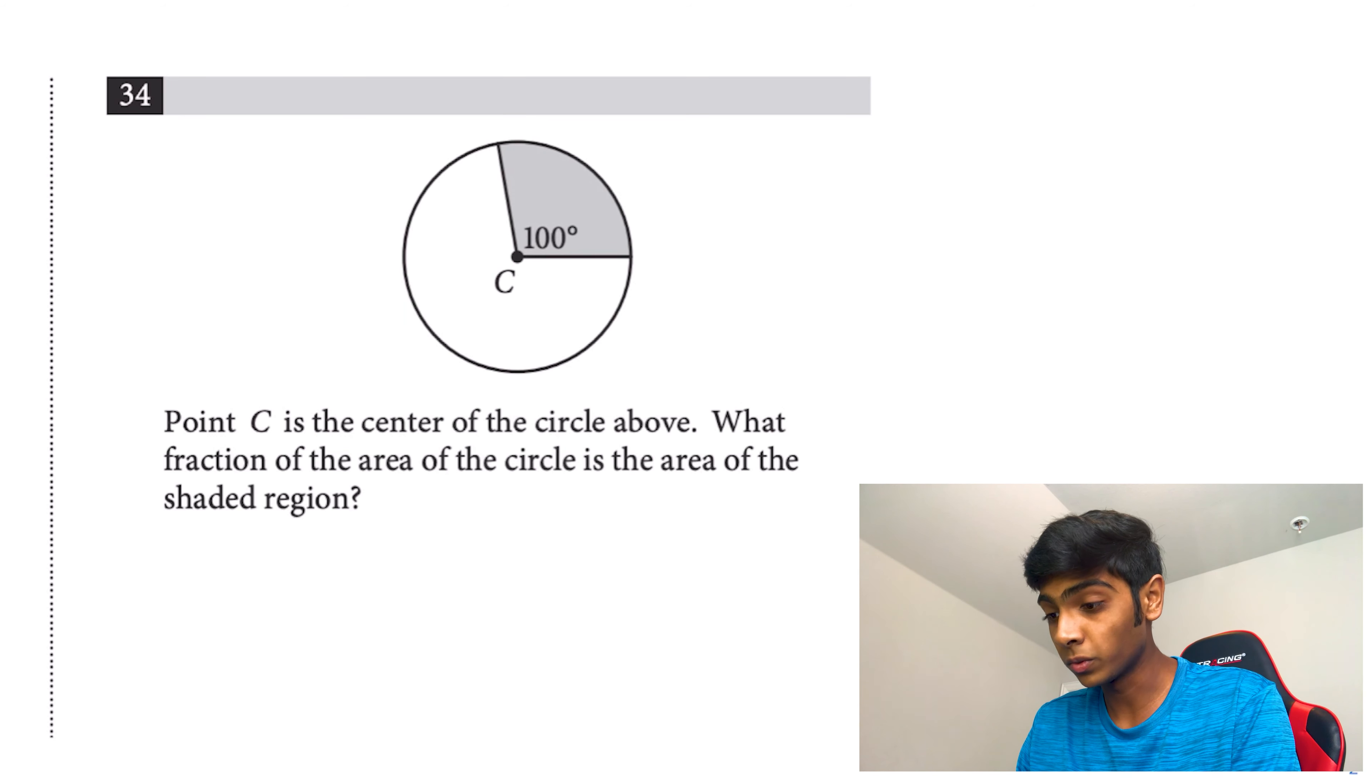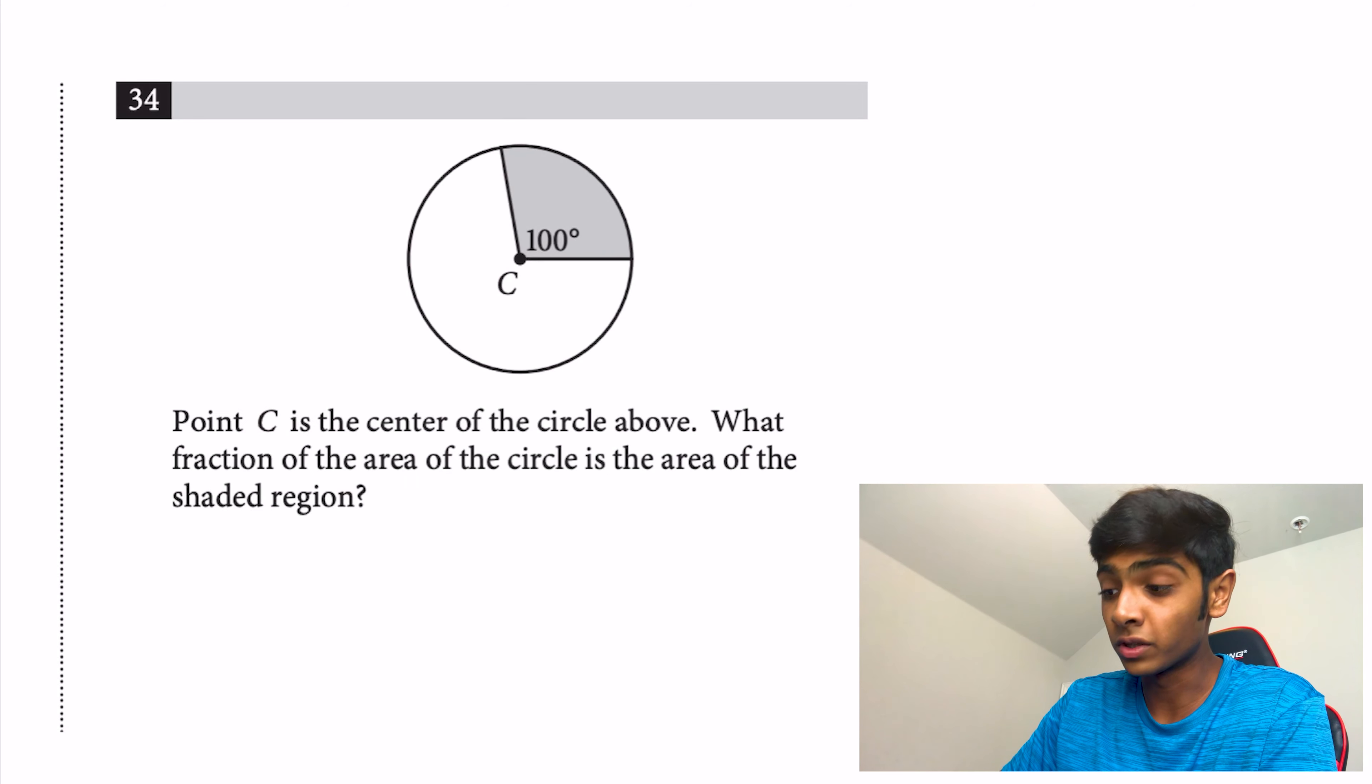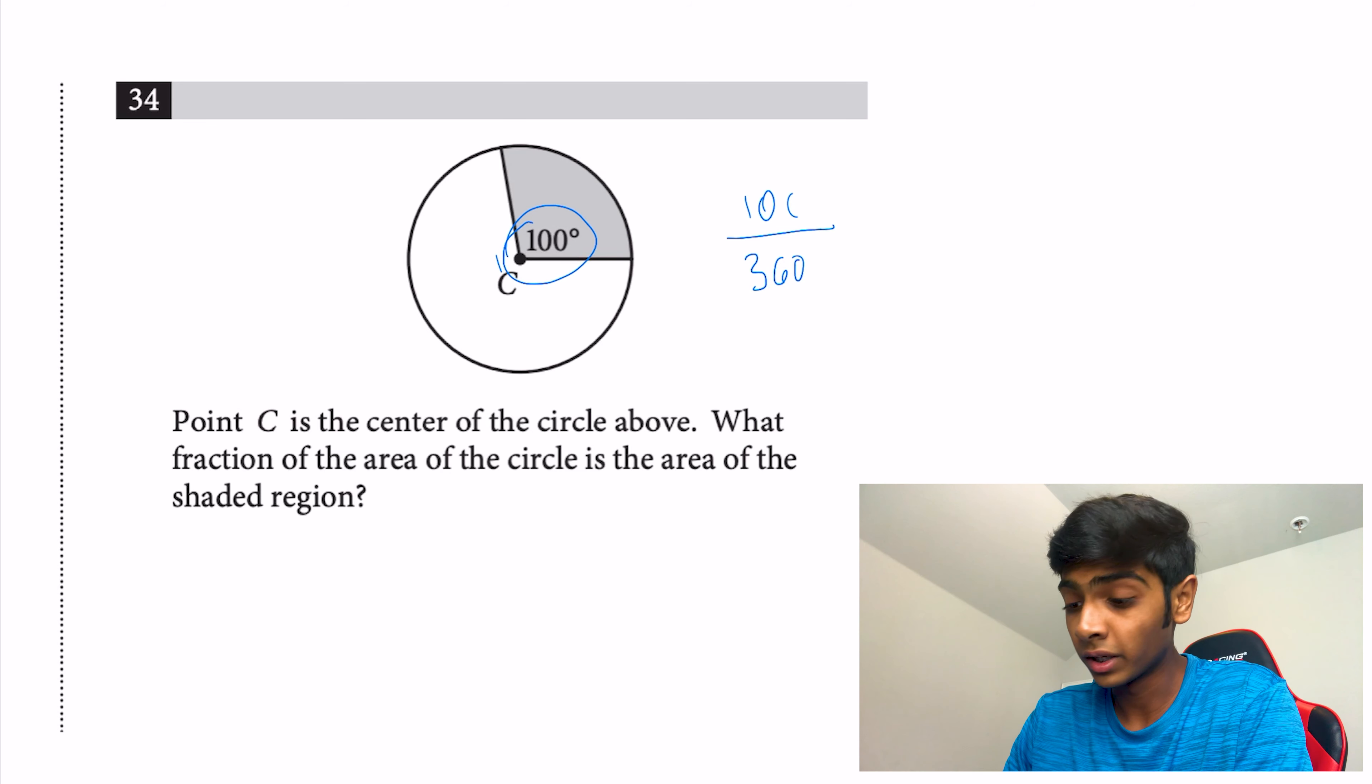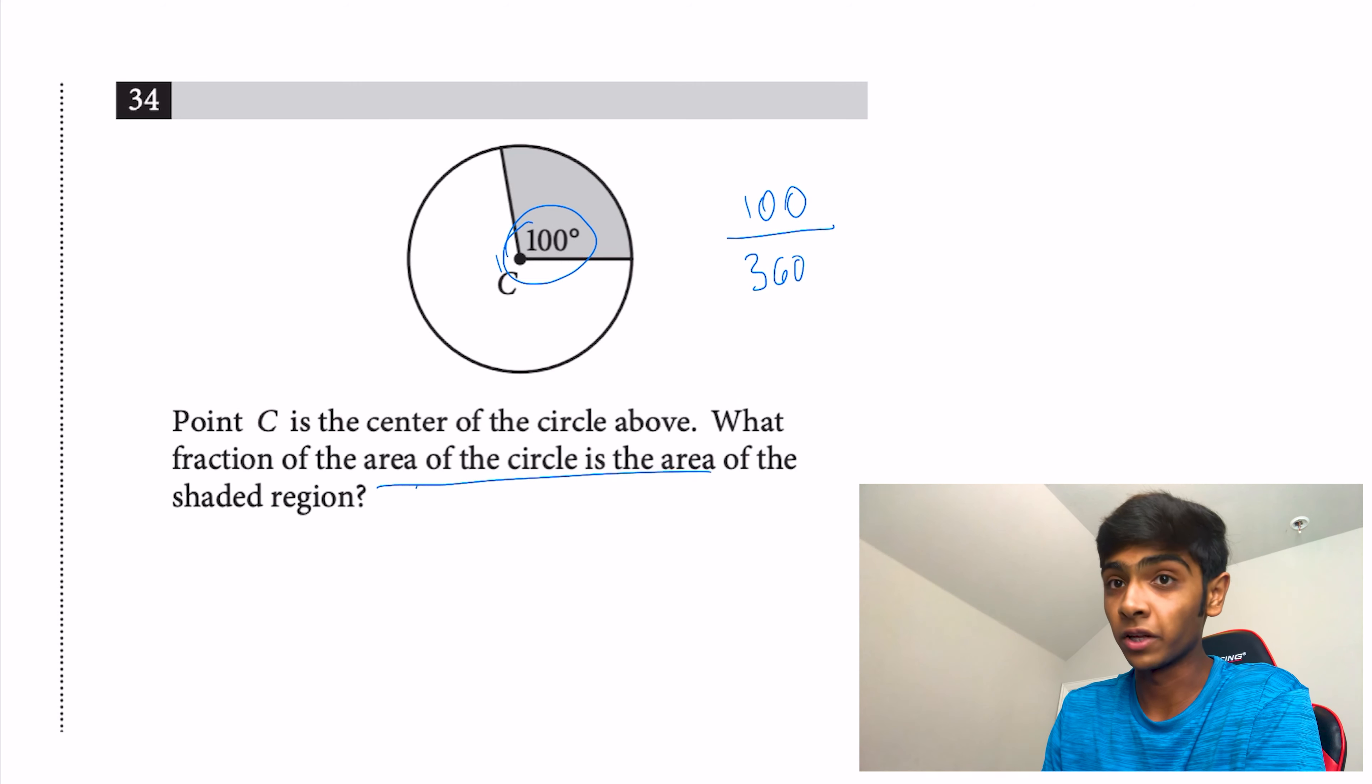For this one specifically, all we really have to do is know that there's 360 degrees total in a circle, and we know that this part of it is 100, so our fraction is just 100/360. All we have to do is simplify, because it's asking what fraction of the area of the circle is the shaded region.